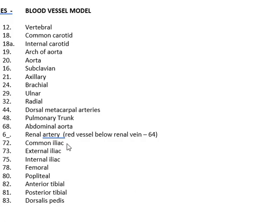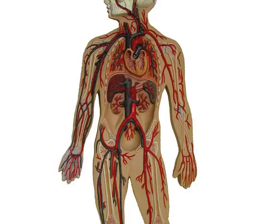If you remember where the bones are, you should be able to figure out where the arteries are. You also need to know the dorsal metacarpal arteries, the pulmonary trunk, the abdominal aorta, the renal artery near the kidneys, and the iliac. The ilium, ischium, and pubis are the three bones making up the pelvic girdle, so the iliac is where you put your hands on your hips. You have the common iliac, external, and internal. Then the femoral, popliteal, anterior tibial — remember where your tibia and fibula are — and the dorsalis pedis.